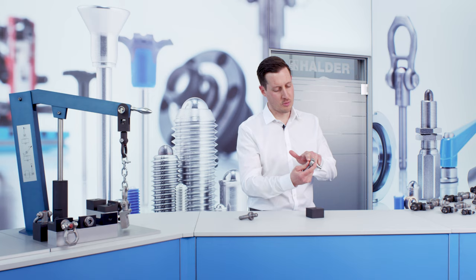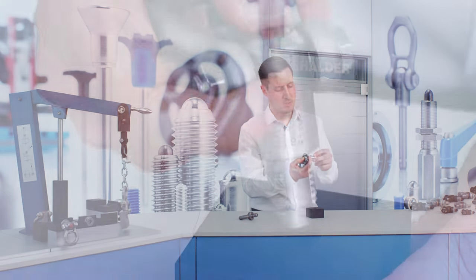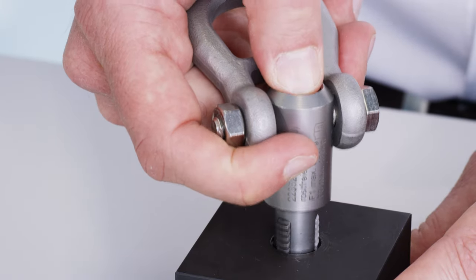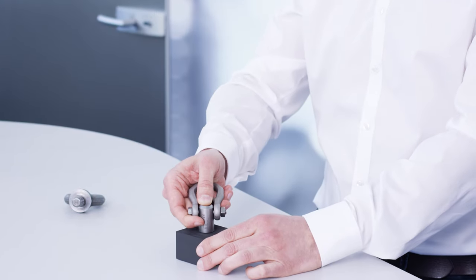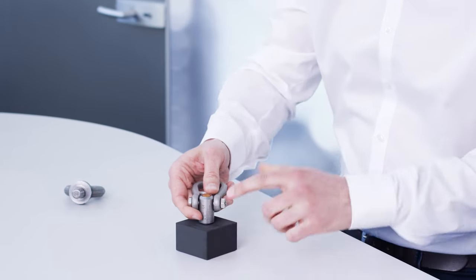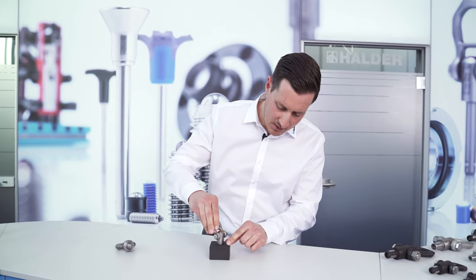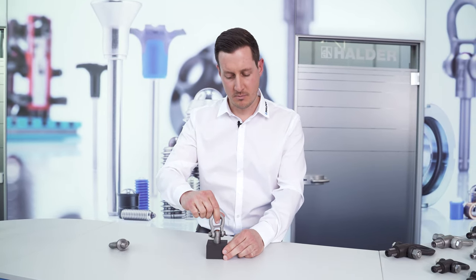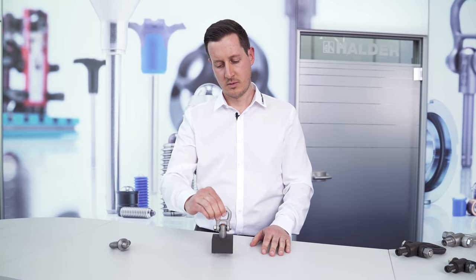When the pressure bolt is actuated, the threaded segments are unlocked and can move inwards. The threaded lifting pin can be inserted. When the bolt is released, the threaded segments are automatically locked. The bolt is applied and the load can be lifted.